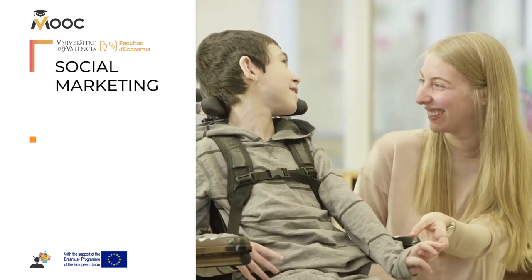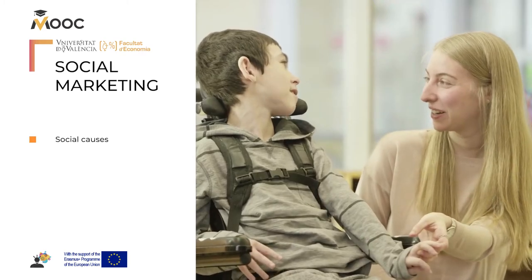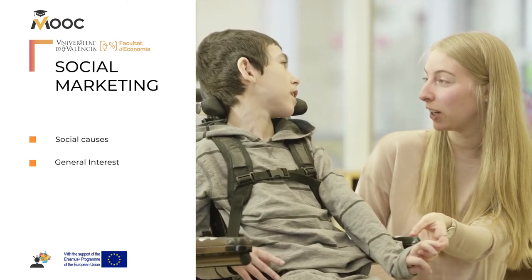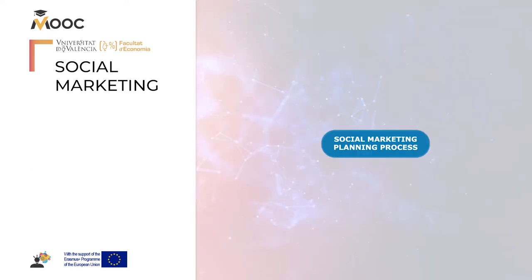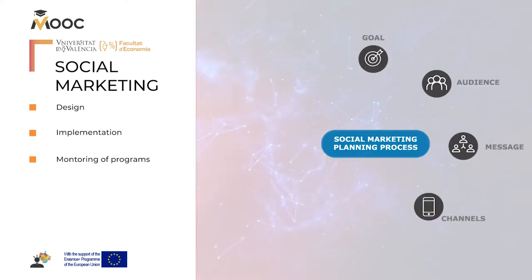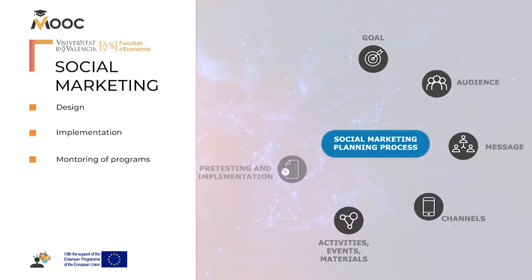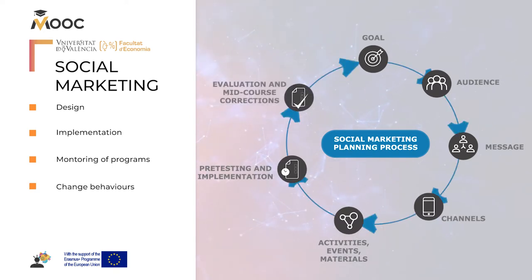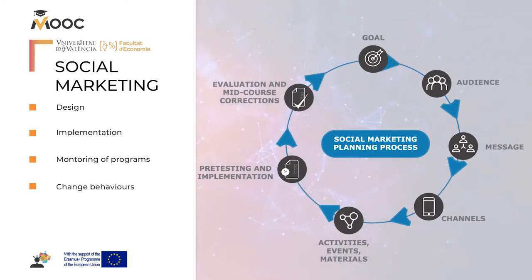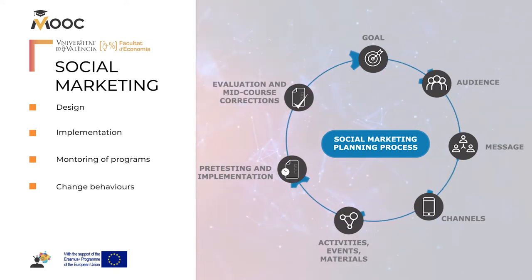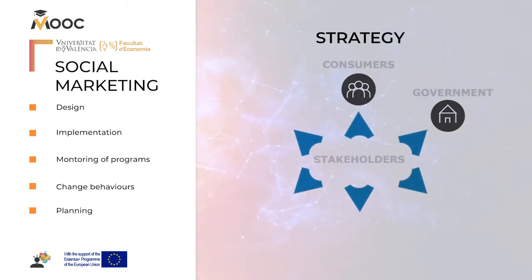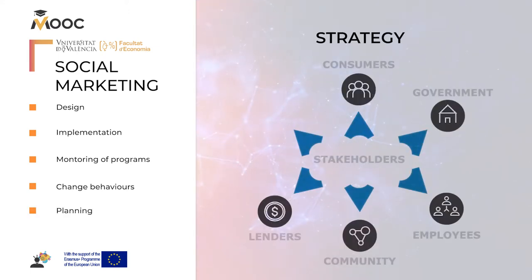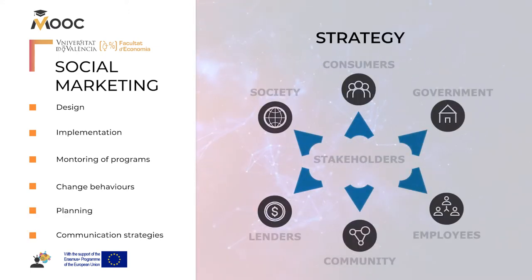Social marketing is the branch of marketing aiming to promote social causes or general interest. It includes the design, implementation, and monitoring of programs designed to change behaviors and to influence the acceptability of social ideas. It comprises services, planning, and communication strategies.